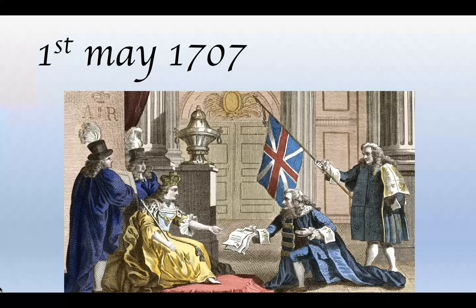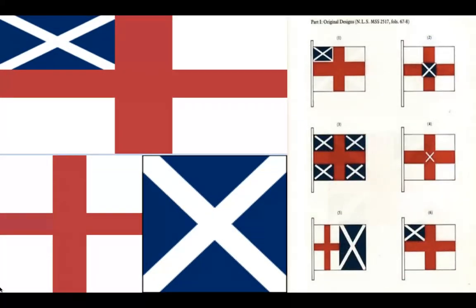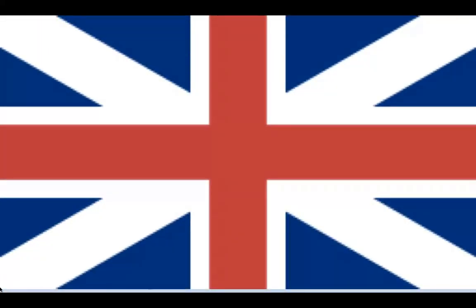On 1st May 1707, Queen Anne united England and Scotland to form Great Britain. A search for a new flag began. Various designs were proposed; the chosen flag placed the flag of England above the flag of Scotland, which many Scots disliked. They came up with their own version, placing Saint Andrew's Cross — Scotland's flag — above England's flag.